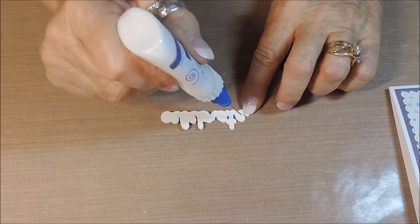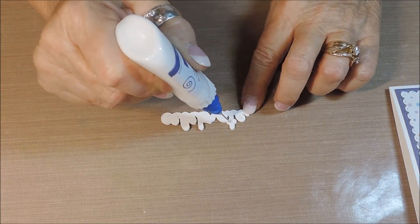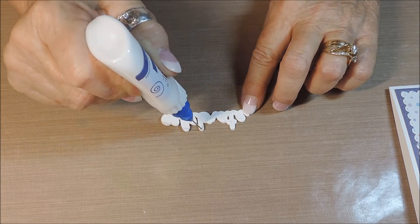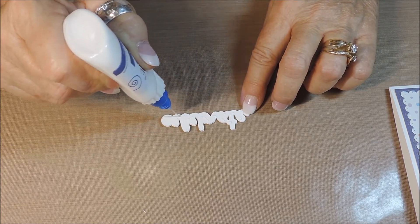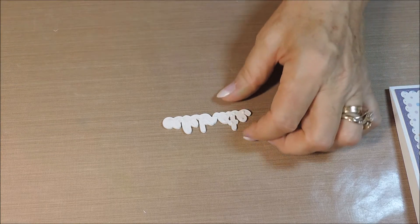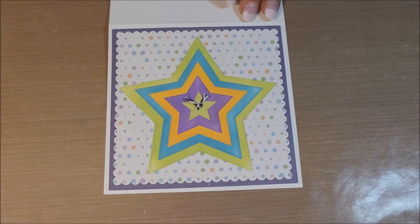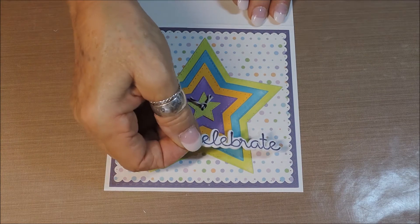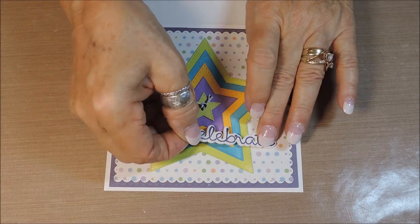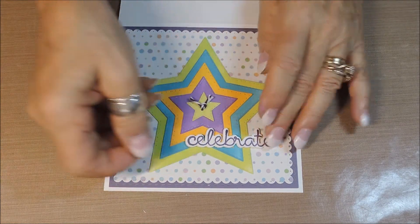Here we are on our final step, which is gluing the sentiment onto the card. Again, I like liquid glue for this because it allows me some flexibility in placing it on the front of the card. Still working with your card flat on the work surface, place your sentiment. This is a great generic card that could be used with any greeting.